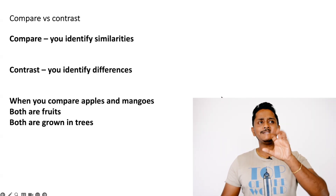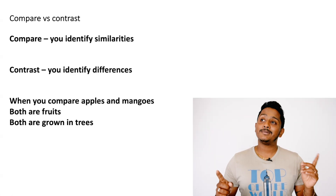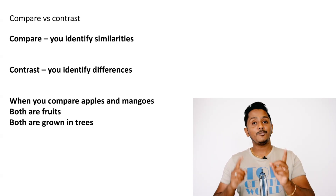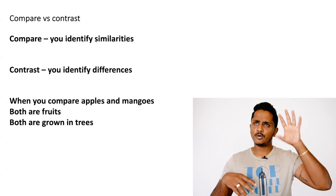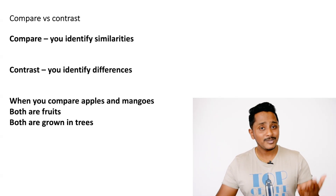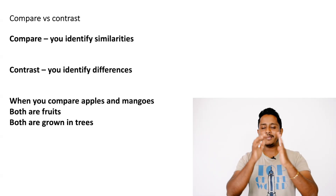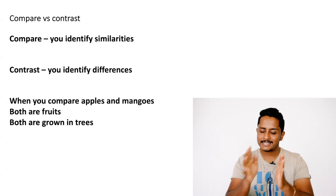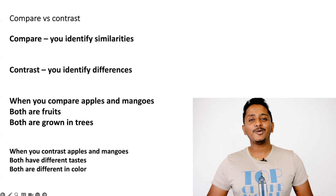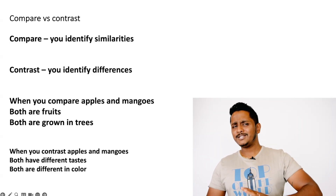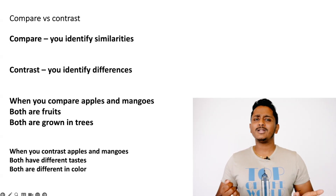When you compare apples and mangoes, you look for what is similar between them. When I compared apples and mangoes, I understood that they both are fruits and both are grown on trees. This is comparison — you take two things, compare them, and understand the similarity between them.